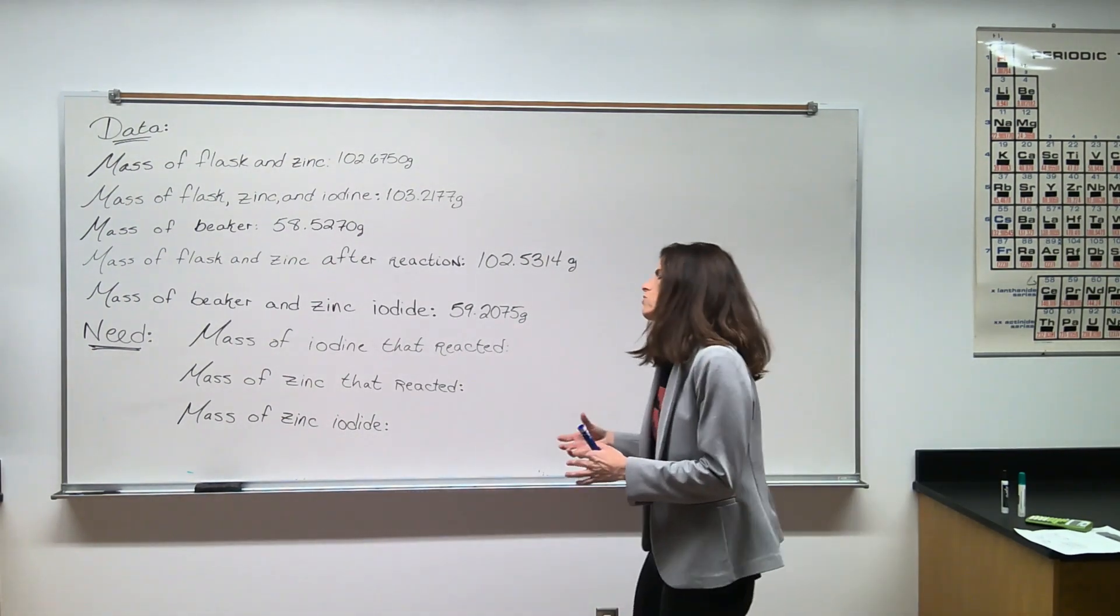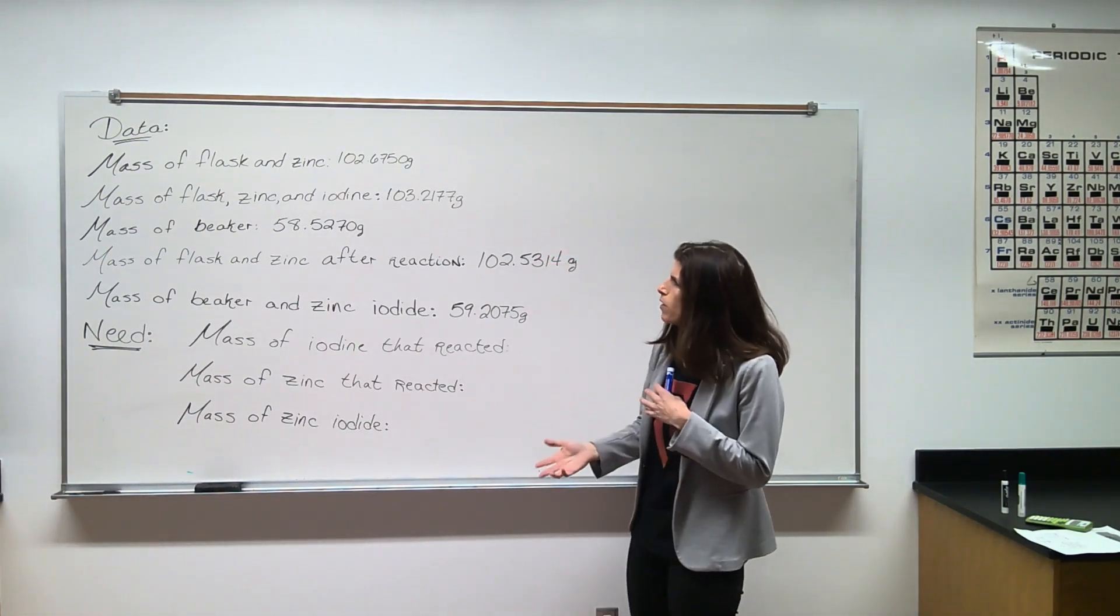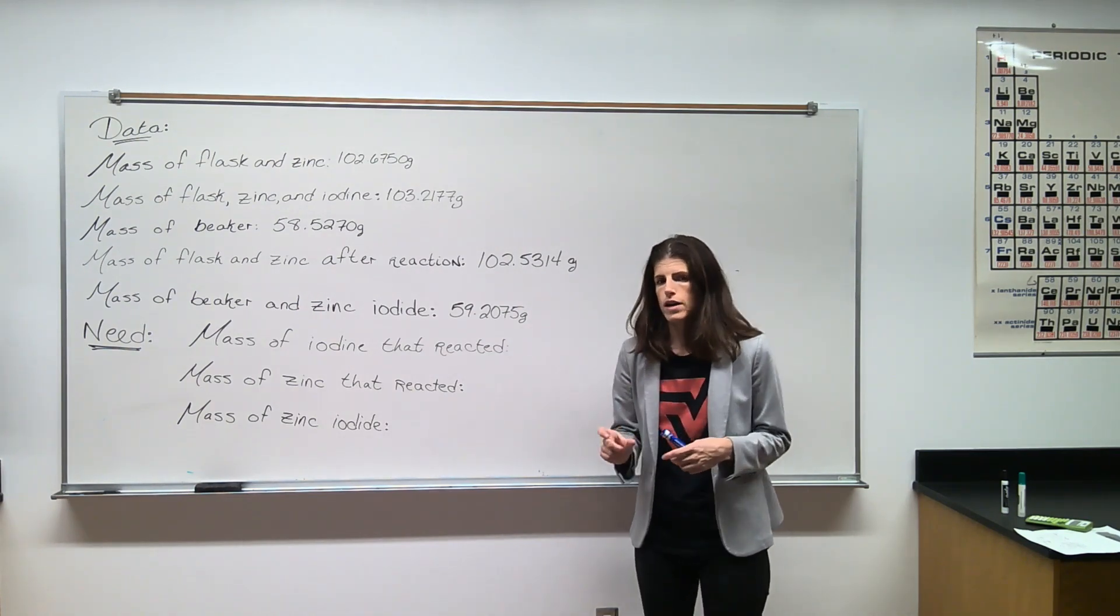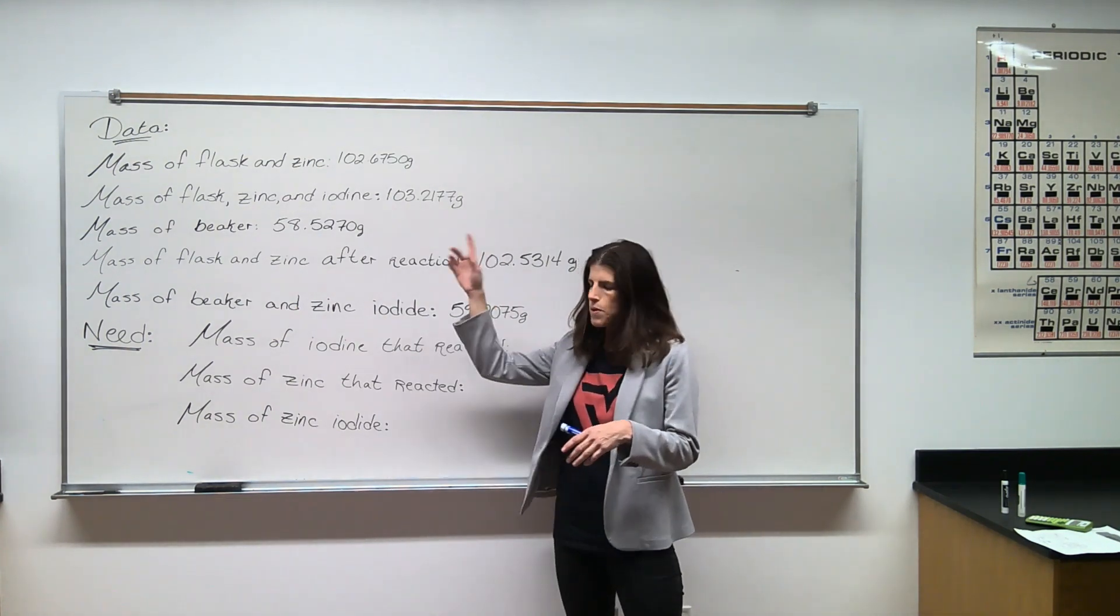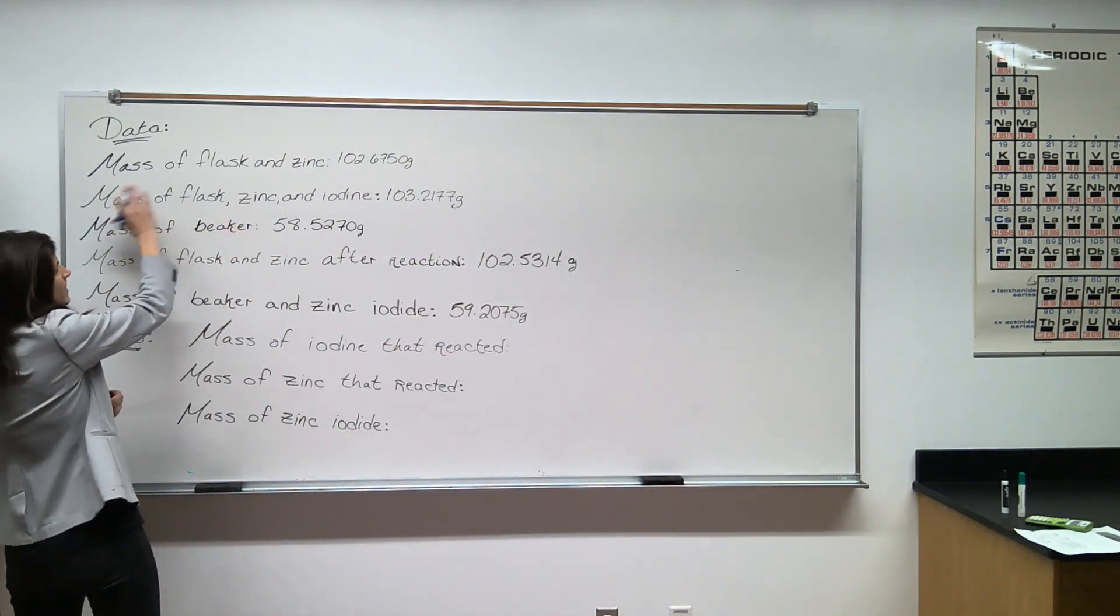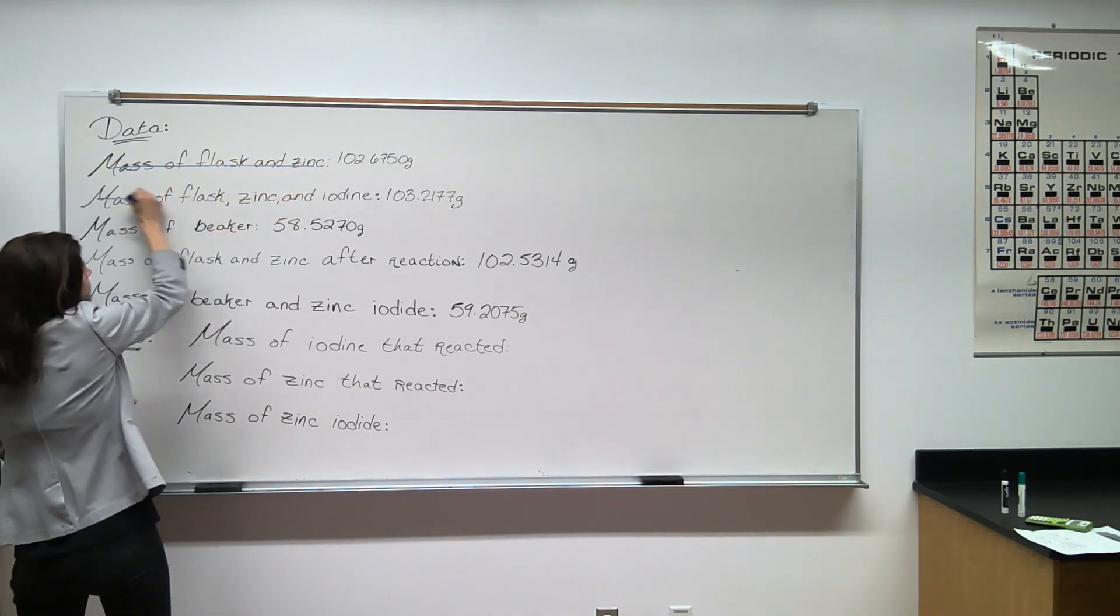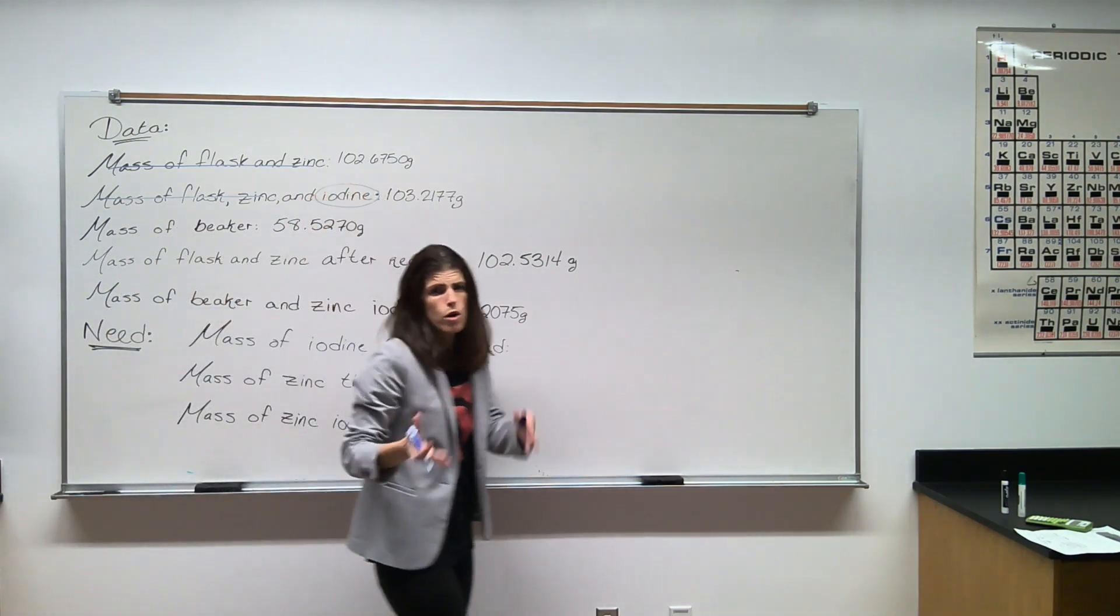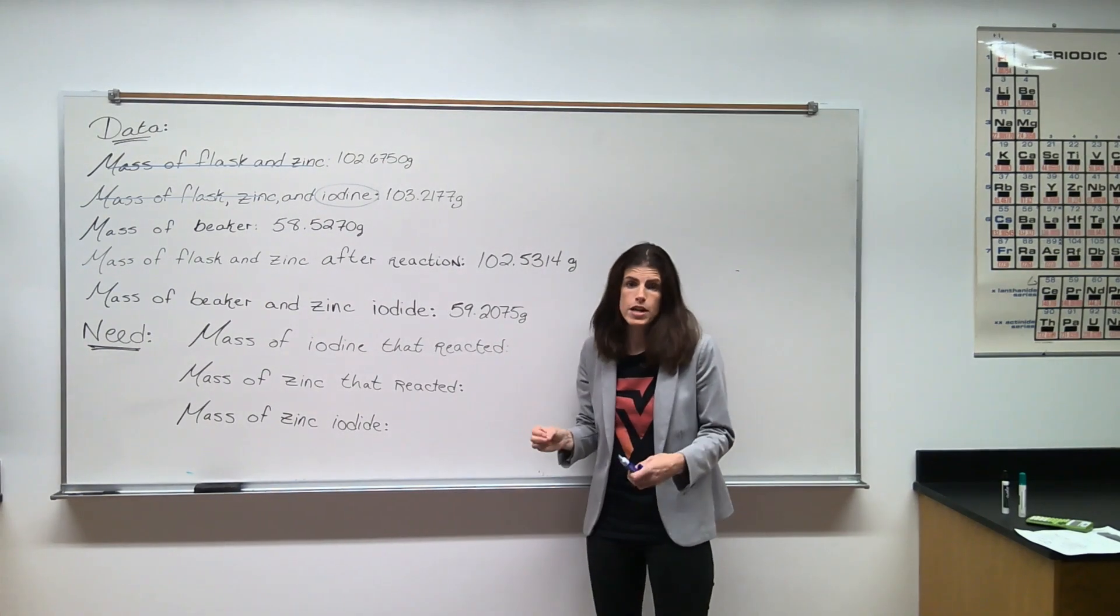When I'm trying to figure out some of these values and I'm looking back at my data sheet, it's important that I compare the different lines and really look for the differences between the two lines. So if I'm trying to figure out the mass of iodine that reacted, I can compare the first two lines. What I like to do is cross out what's exactly the same. Both lines say the mass of the flask and the zinc. The only difference between these first two lines is the word iodine. The other important piece here is that iodine was our limiting reagent.